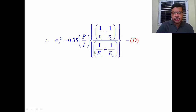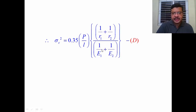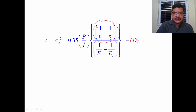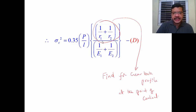Applying this equation to gear teeth: the total load P equals Pn, the normal load, where Pn = Pt / cos α. L equals the length, which for gear teeth is the face width, so L becomes b (face width). E1 and E2 are material properties that remain unchanged. R1 and R2 represent the radii of curvature of the involute teeth profile. These are the unknown parameters that need to be determined. Once found, the equation can be applied to gear teeth.